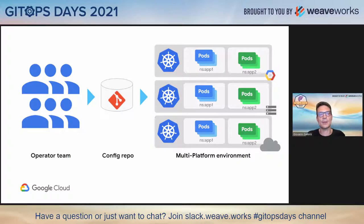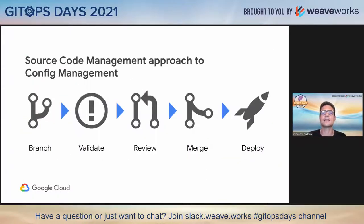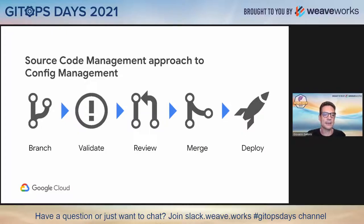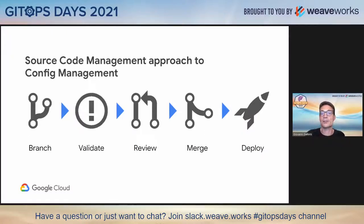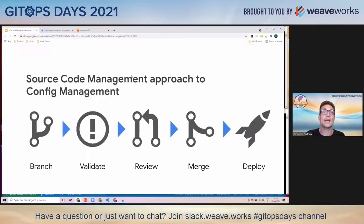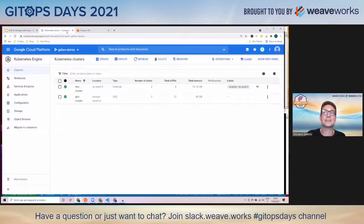If a local drift happens, it is avoided. As we said at the beginning, this allows you to apply some of the source code management approach to cluster management. For example, every configuration change is a commit — it has a commit ID. So in case something goes wrong, you can always roll back to a configuration that you know works well.